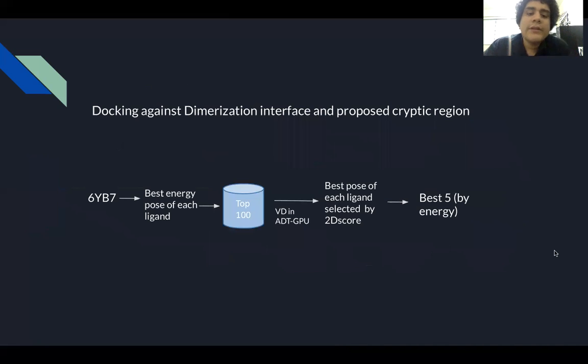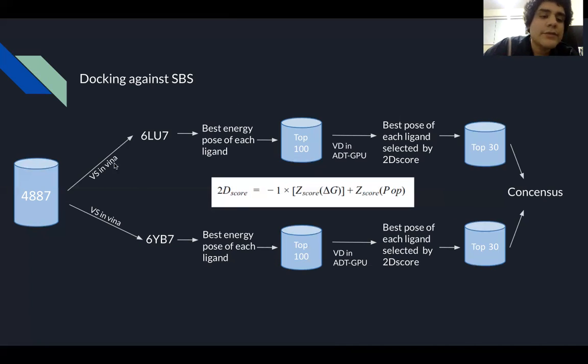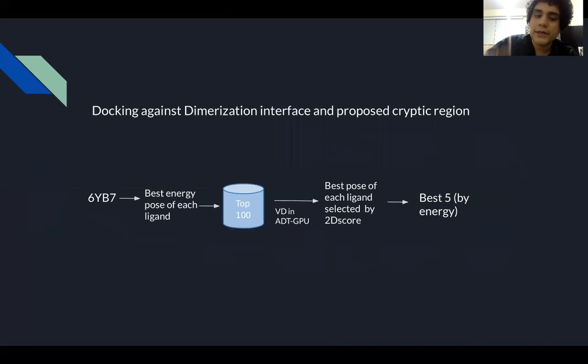And for the dimerization interface and the proposed cryptic region, as we didn't have two different conformations to test, we just performed a simple virtual screening approach following the same steps. Virtual screening in Vina, validation using AutoDock GPU, etc.